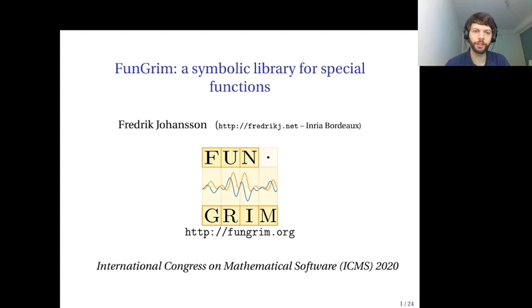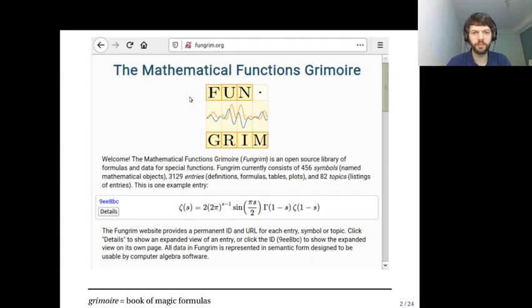Fungrim is a website I've been developing for about a year now. You can find it at Fungrim.org. Fungrim is short for the mathematical functions grimoire, and grimoire means a book of magic formulas. The magic formulas in this case are special function identities and theorems for mathematical functions. It's essentially an online reference work for mathematical functions and it has right now around 3000 entries.